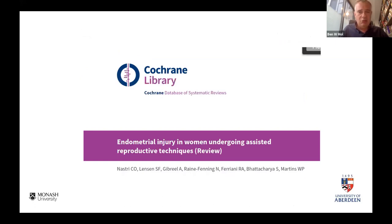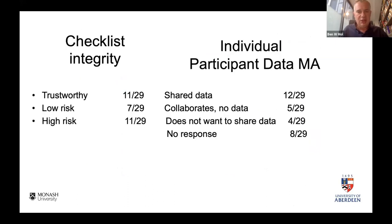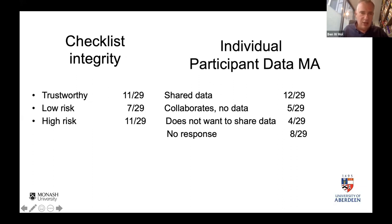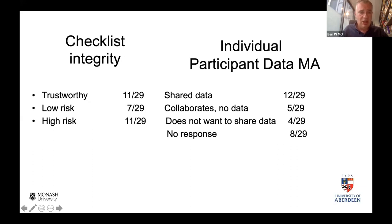In the example of endometrial injury as a treatment to improve fertility outcomes, we assessed the literature and found about one third as trustworthy, one third as high risk of problems, and a middle category — which quite mimics the ability to share data. So the same problem: people who do not share data have published studies that are high risk of integrity concerns. And for COVID-19, in the example of hydroxychloroquine and ivermectin, the estimate is that at least 20% of recently published RCTs in that area are fabricated.